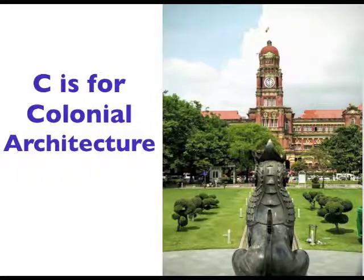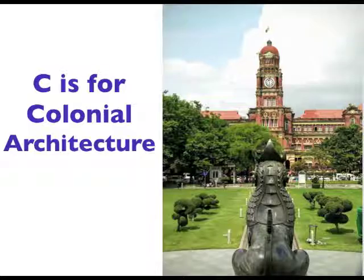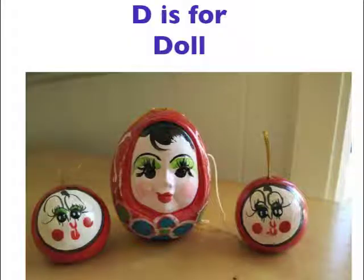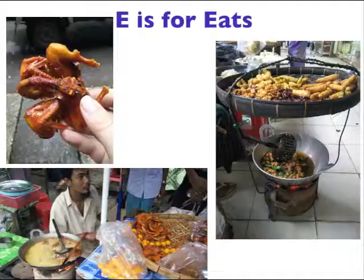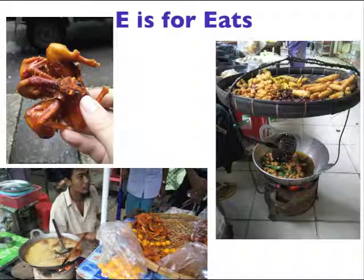C is for Colonial Architecture. D is for Da. E is for Eats — street eats are everywhere.